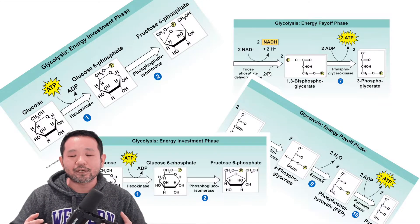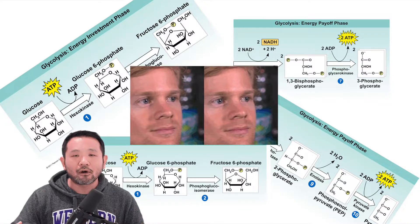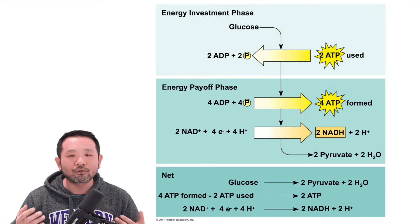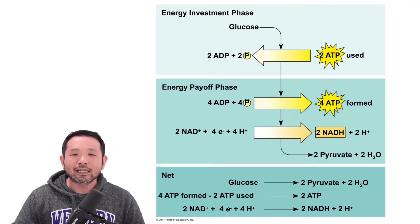There is a relatively complex diagram that displays all of the different steps involved in the glycolytic pathway. However, for the purpose of the AP exam, it's not necessary that you remember all of the enzymes and all of the chemical substrates that are part of that long pathway. So what we're going to do for this video is just focus on the simplified version of glycolysis.